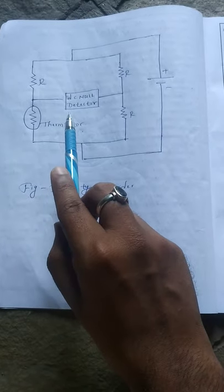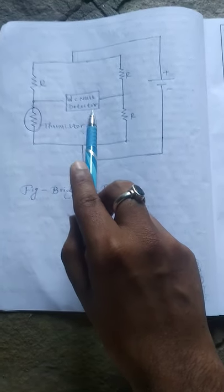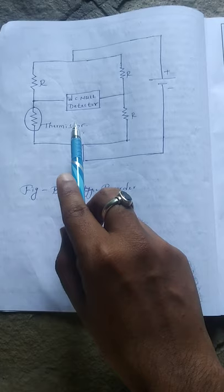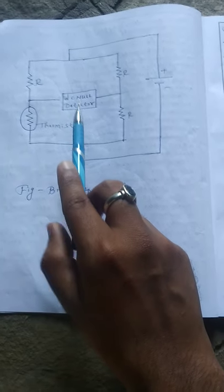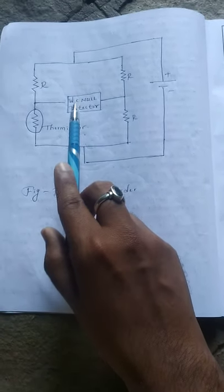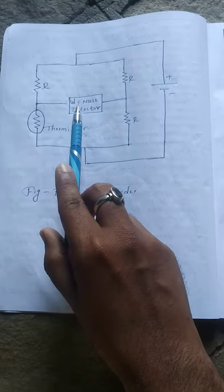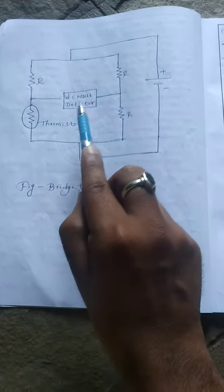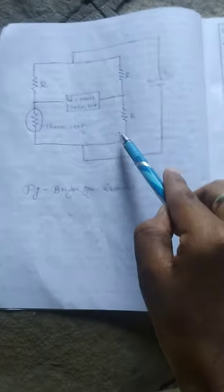Third point: the resistance changes in the thermistor cause corresponding changes in bridge output. These changes are applied to the detector. Fourth point: the bridge balance can be restored by varying the resistance of the other arm of the bridge.